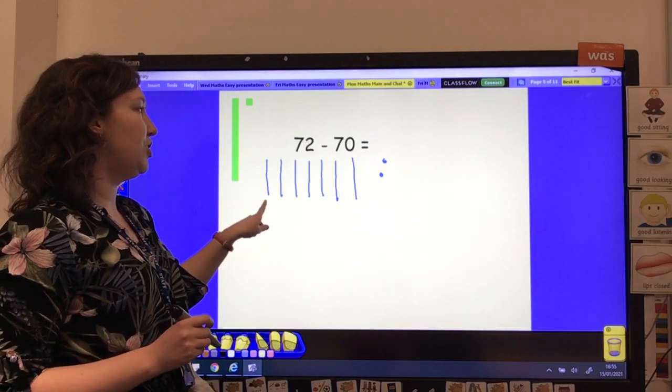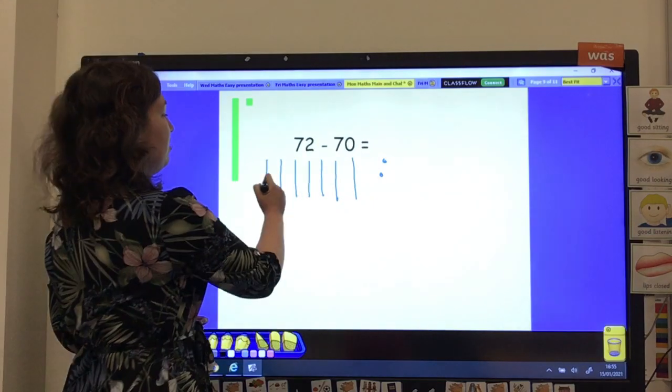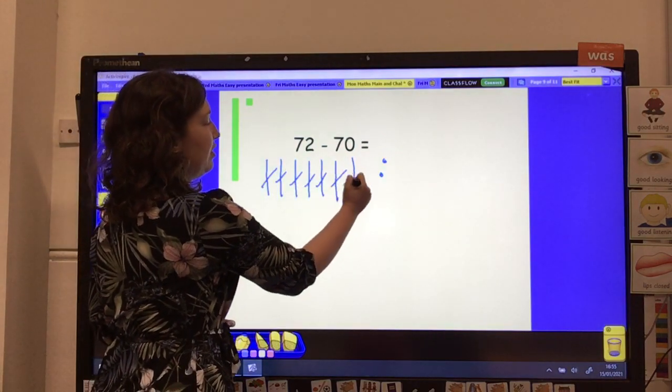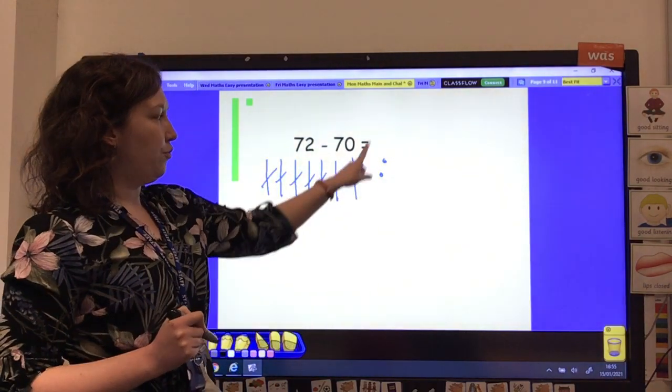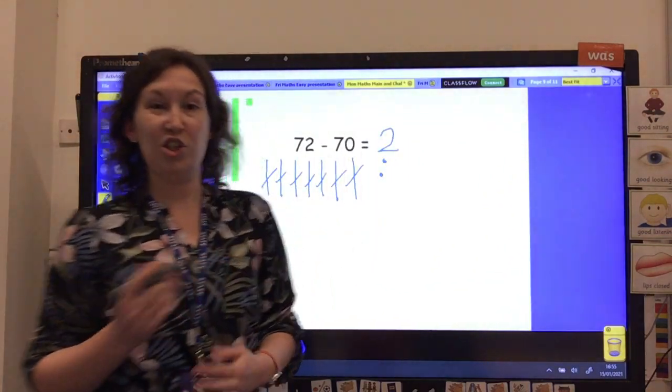Now I know that the number 72 is made up of a 70 and a 2. So I can cross out all 70 here. And what have we got left? We've only got two 1s. So we've got 2 left.